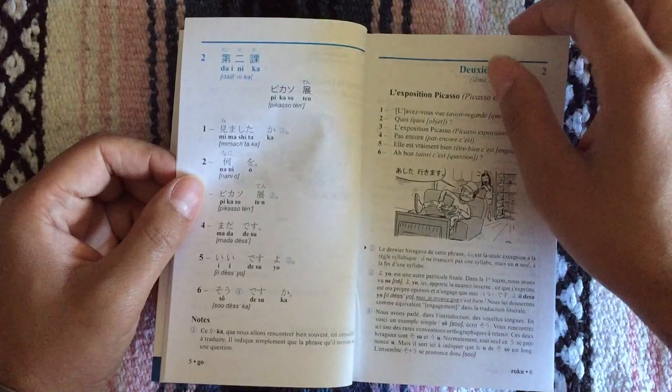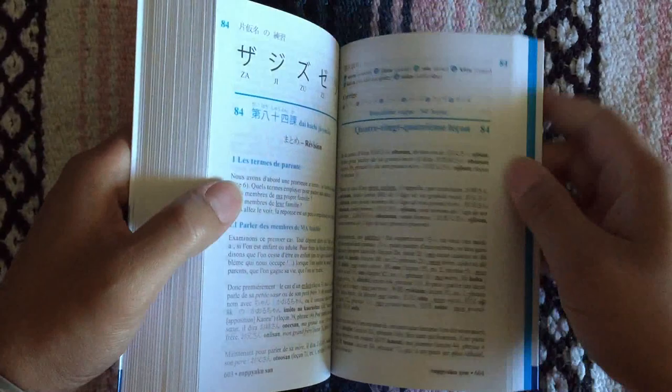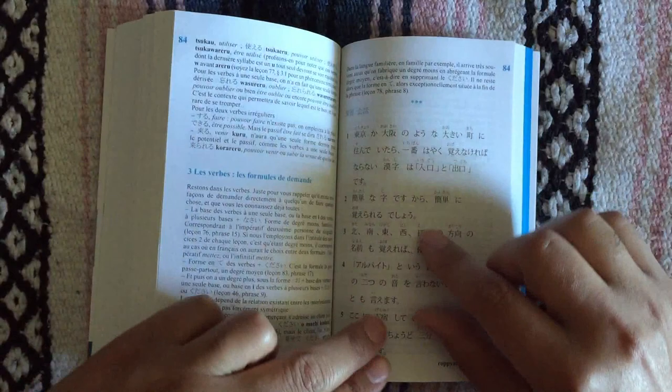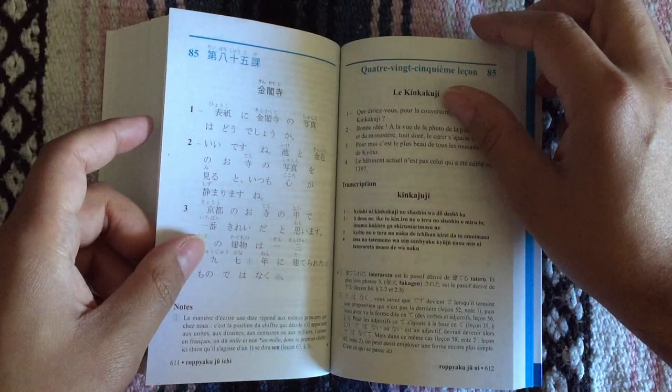It goes like this until I believe lesson 84 or so. That's a review lesson and then it's basically just Japanese on one page and then maybe you get the transcription on another page, which I like because it will help learning to read and write later on.